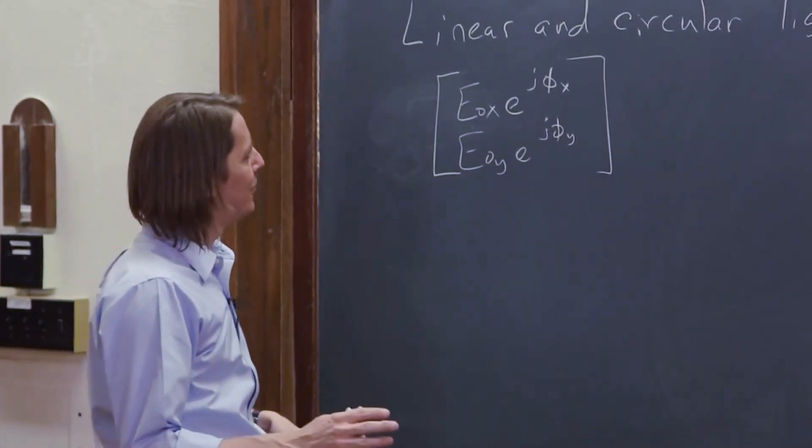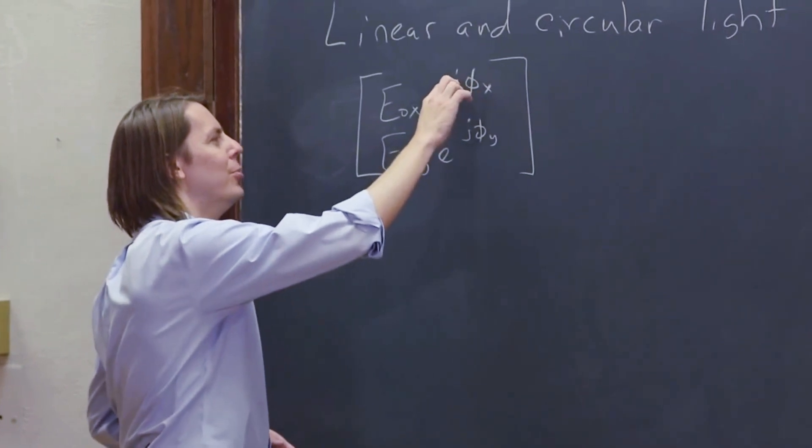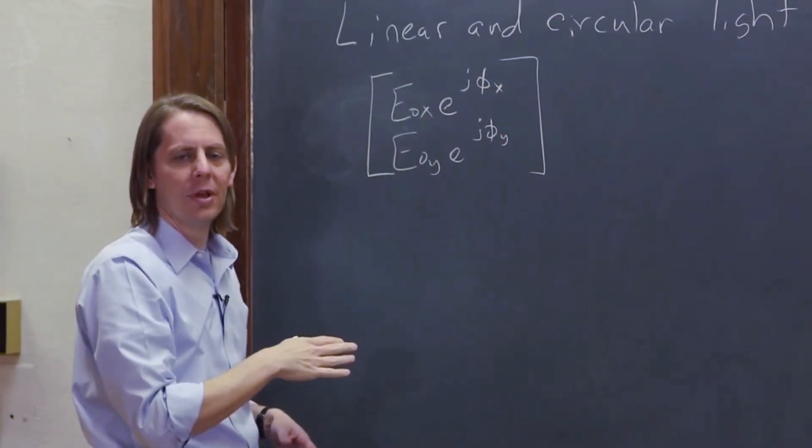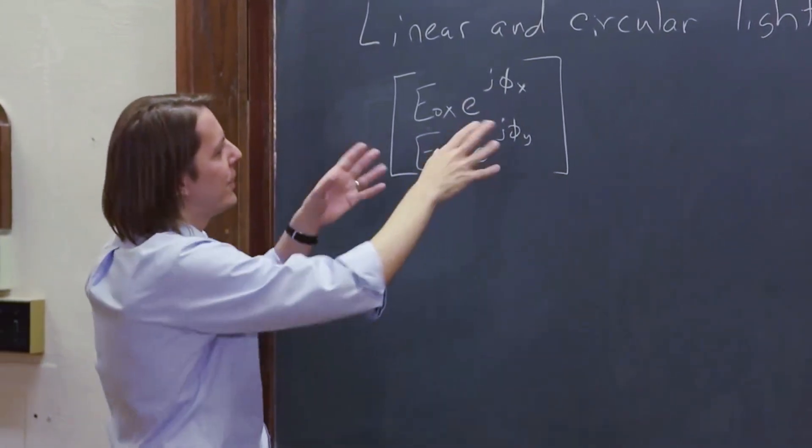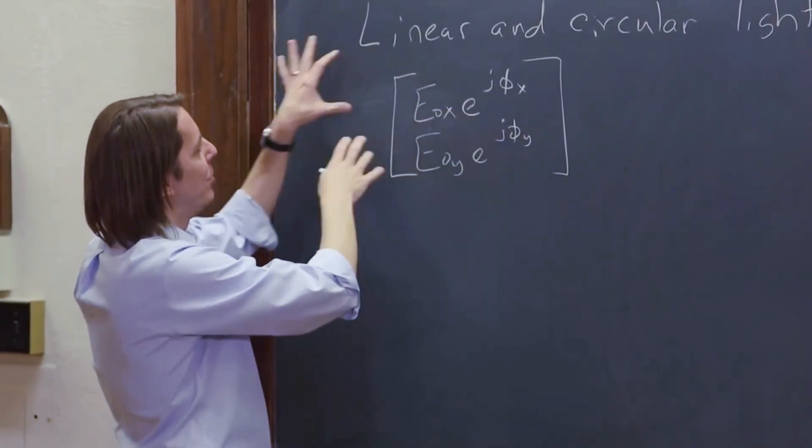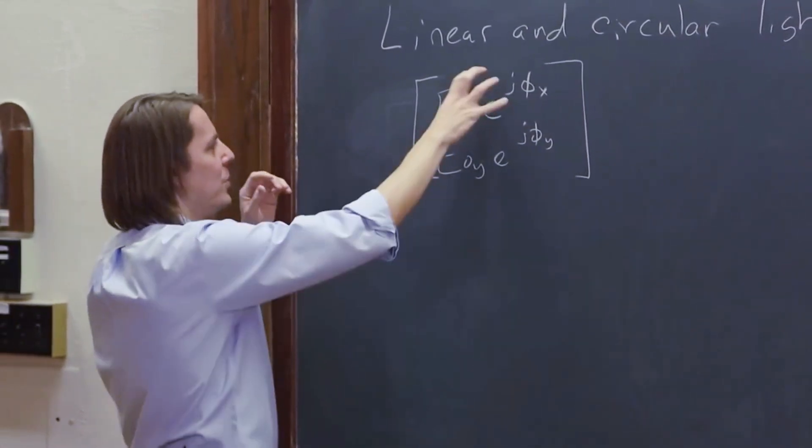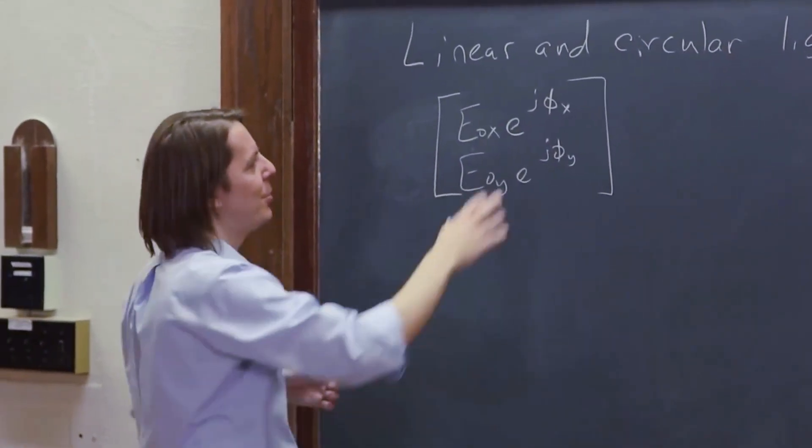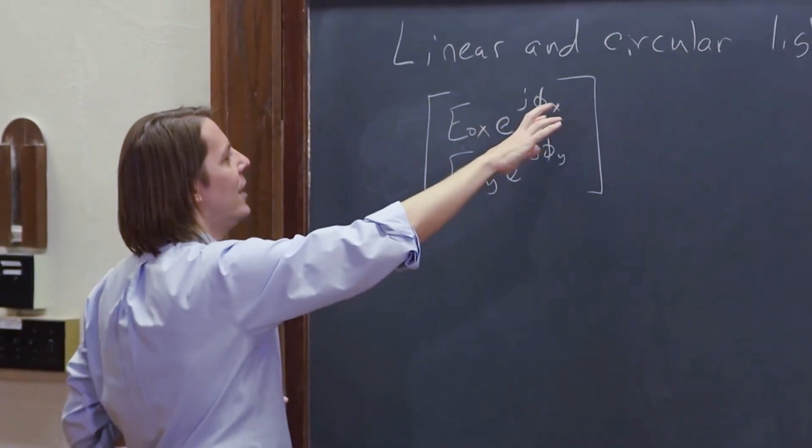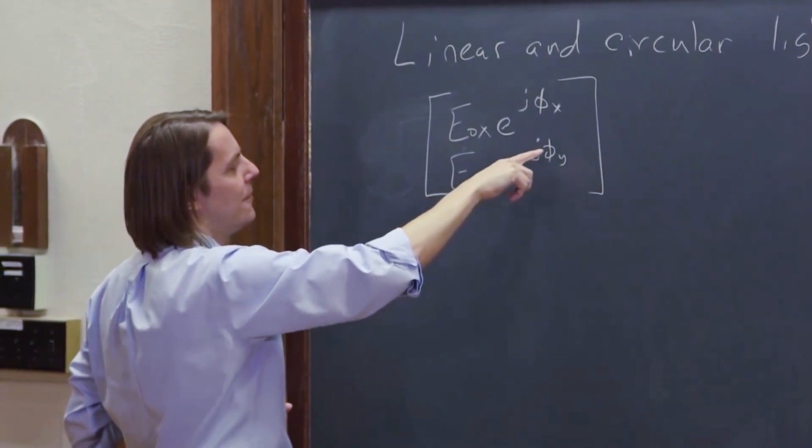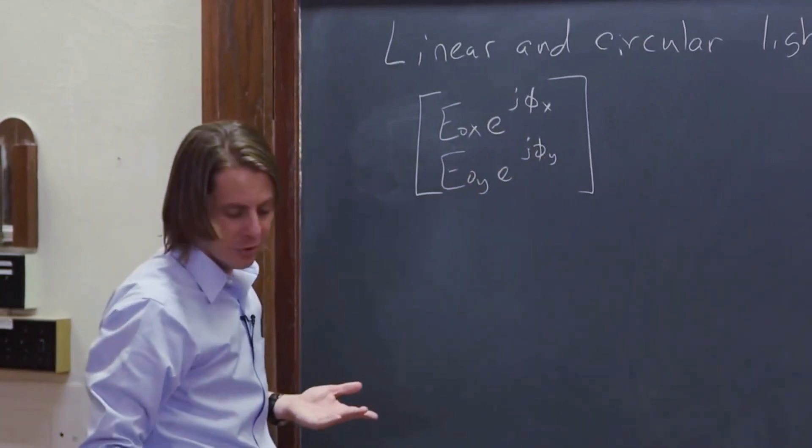The one thing we could do to simplify it is we could basically divide both terms by E to the J Phi X. With Jones vectors you can always divide something out of both of them and pull it out and then ignore it. That's always allowed because if you do it to one it always affects the other one. So for example if we pulled out E to the J Phi X then this basically becomes some real number over E naught Y E to the J Phi Y minus Phi X.